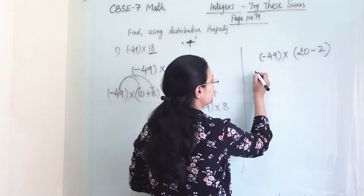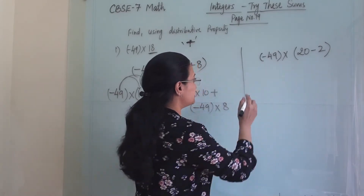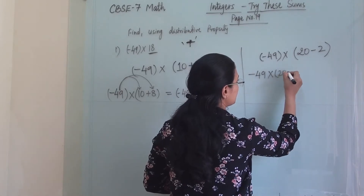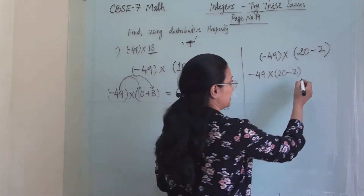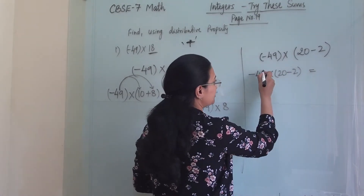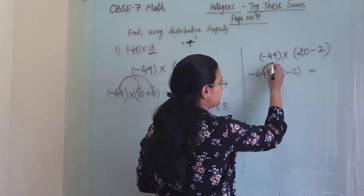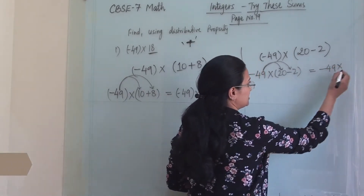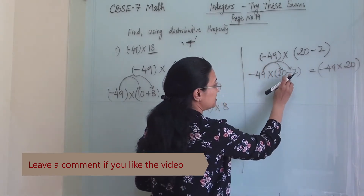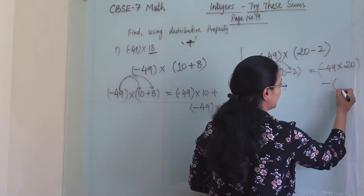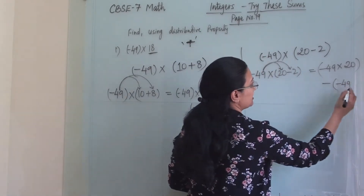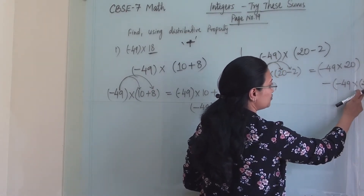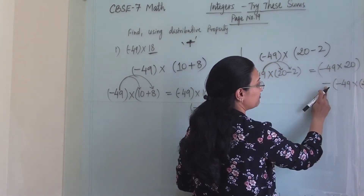Similarly, what will be my left hand side for this number? That is minus 49 into (20 minus 2). Now, for my right hand side, first I will multiply with 20 and then with 2 — so minus 49 multiplied with 20, then minus sign, and then minus 49 multiplied with 2. We write only 2, not minus 2, because that minus has already been written.